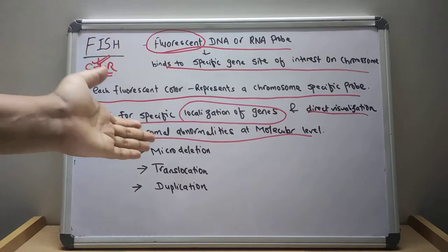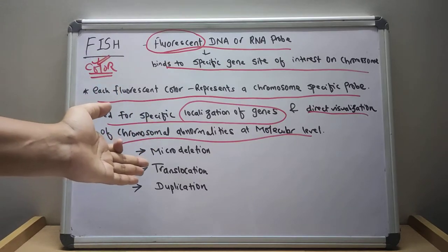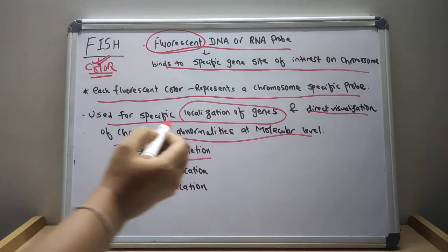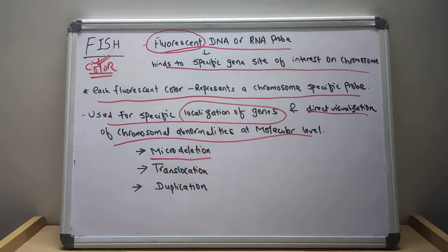There could be micro deletion, translocation, and duplication. In micro deletion, no fluorescence on the chromosome is observed compared to fluorescence at the same locus on the second copy of that chromosome.